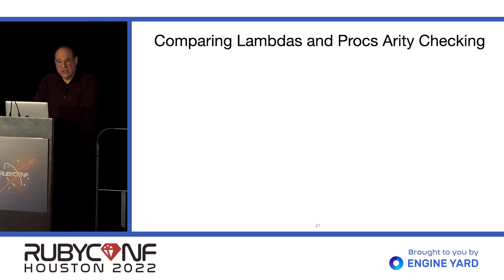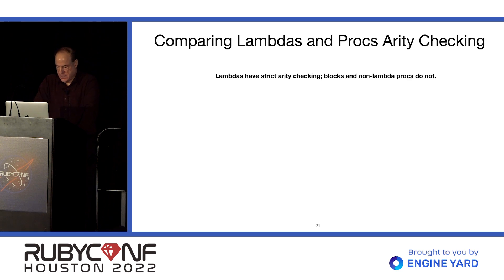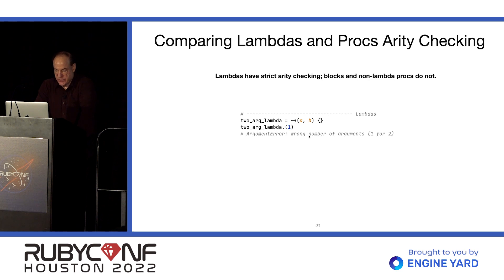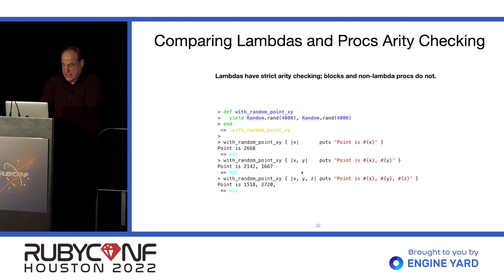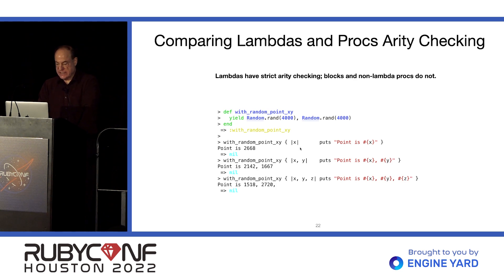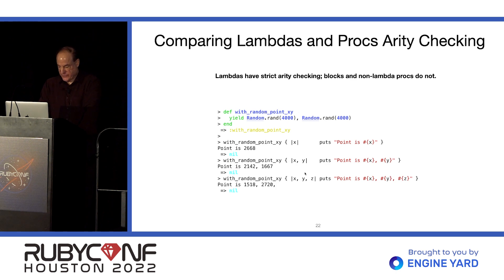Arity checking — in case you're not familiar, arity is just the number of parameters passed to a method, and checking is making sure the correct number has been passed. Lambdas have strict arity checking; blocks and non-Lambda Procs do not. Here's a Lambda expecting two arguments — if we call it with one, we get an error. In contrast, a Proc has no complaint. And with a code block, there's also no complaint — it just uses the first value and substitutes nil for anything missing.